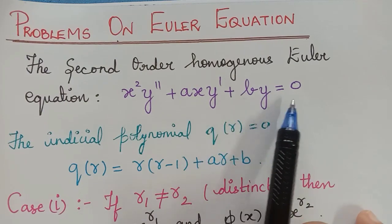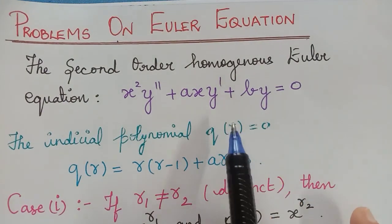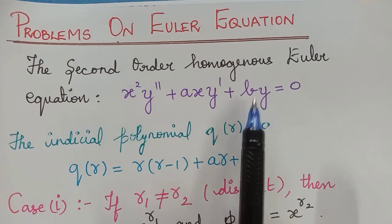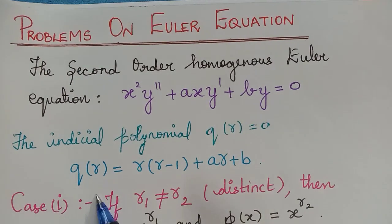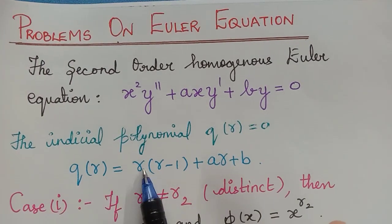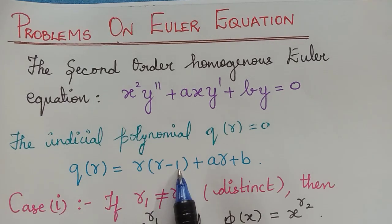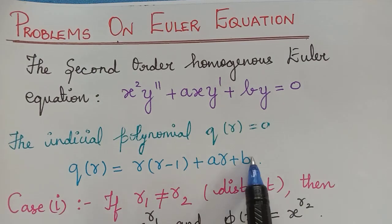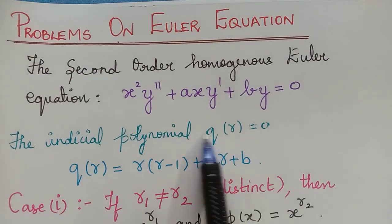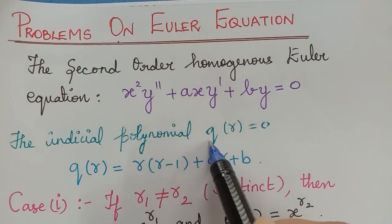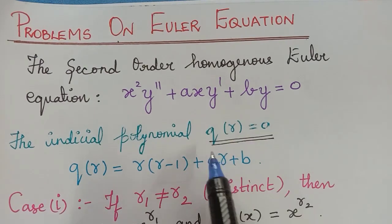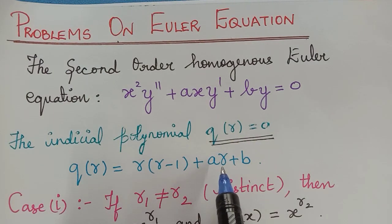After identifying the problem, we have to first write the indicial polynomial of the equation, which is given by q of r is equal to r multiplied with r minus 1 plus ar plus b. When we equate this indicial polynomial to 0, we get two roots because the equation is a quadratic equation, and so we get two roots.